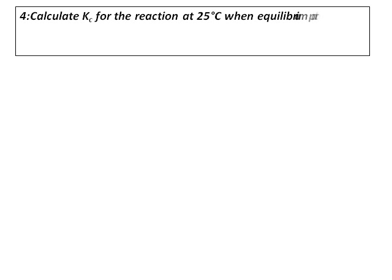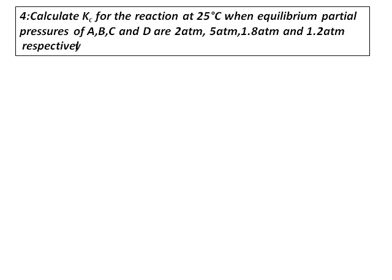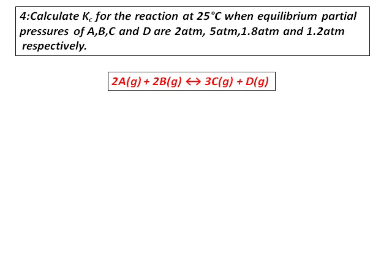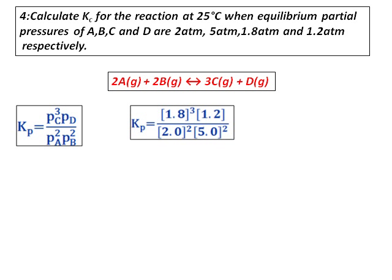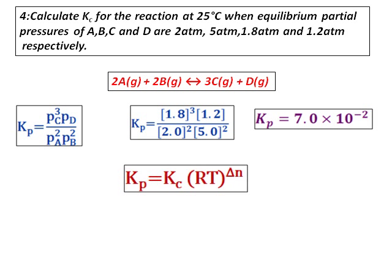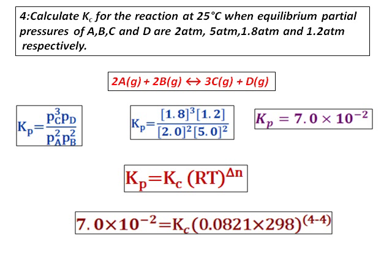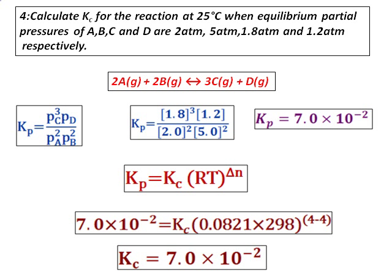Question number 4: Calculate Kc for the reaction at 25 degrees Celsius, when the equilibrium partial pressures of A, B, C, and D are 2, 5, 1.8, and 1.2 atmospheres respectively. In this case, concentrations are not given but equilibrium pressures are, so we first calculate Kp using product over reactant with the pressure values. Then to get Kc from Kp, we use the same equation. In this case delta N equals 0, so Kp and Kc are equal.